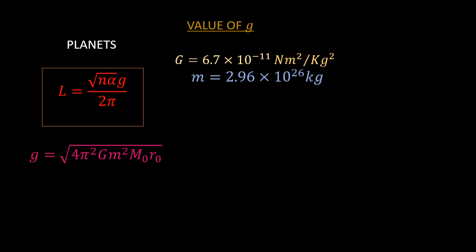little m, the mass of a planet, 2.96 exponential 26. This is the average mass of a planet in our solar system. This mass is subject to change in later videos, when I will be using a better average for over 1,000 planets.